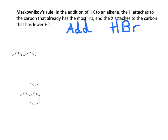If we are adding hydrobromic acid, the hydrogen will be added to the carbon with more hydrogens, and the Br will go on the carbon that has more carbons bonded to it. The same applies to the cyclic alkene — the cycloalkene will add the hydrogen to the carbon that has more hydrogens and the Br to the carbon that has the fewest hydrogens.